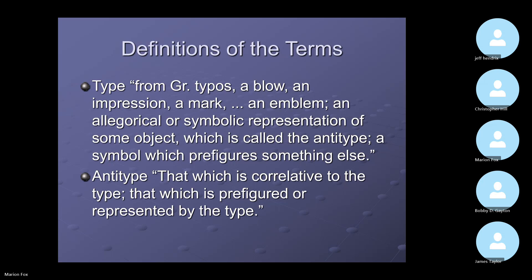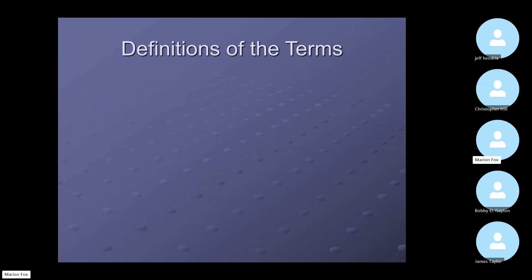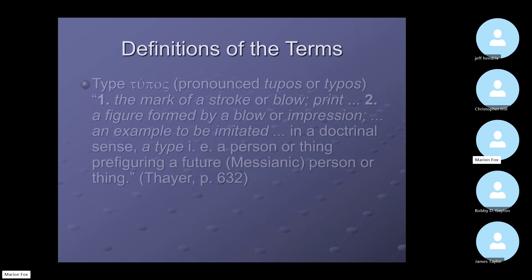Antitype: according to the type, which is prefigured or represented by the type itself. This is our English word antitype, and the antitype comes from the Greek word antitupos. We'll look at that in just a minute.